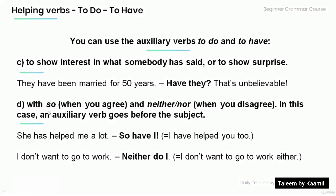We also use these auxiliary verbs with 'so' when you agree, and 'neither' or 'nor' when you disagree. In this case, the auxiliary verb goes before the subject. For example: 'She has helped me a lot.' 'So have I' — meaning I have helped you too. And: 'I don't want to go to work.' 'Neither do I' — meaning I don't want to go to work either.